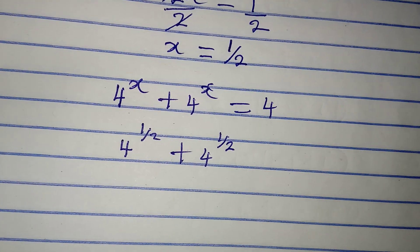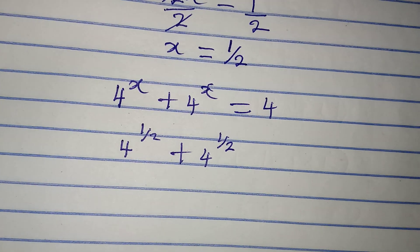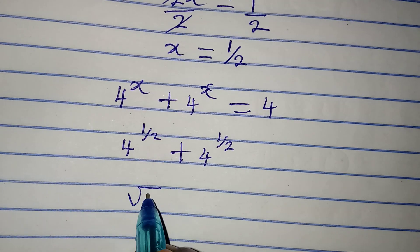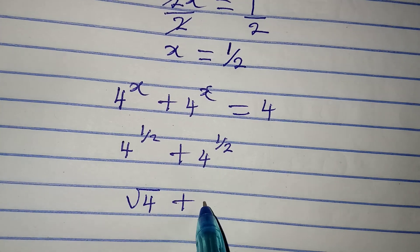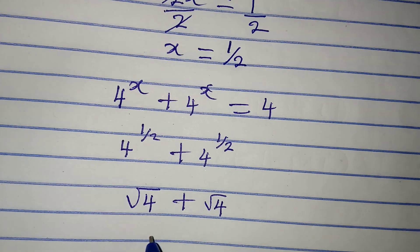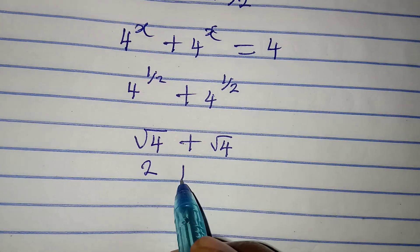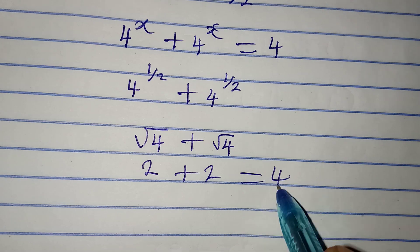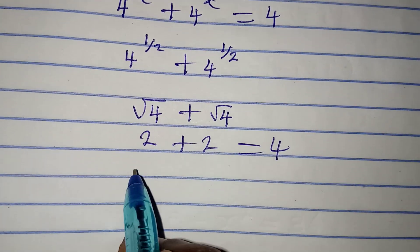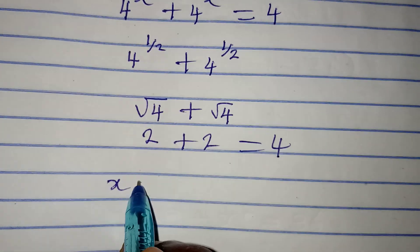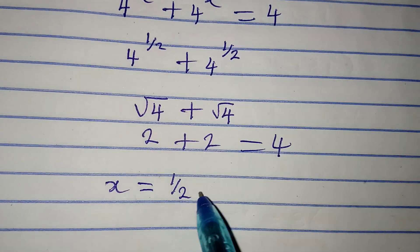And then remember that any number to the power of 1 over 2 means the square root of the number. So we have square root of 4 plus square root of 4, and this is 2 plus 2, which is equal to 4. So therefore we are correct to say that x is equal to 1 over 2.